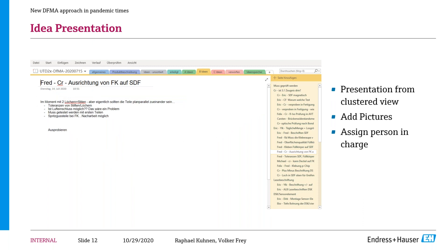When the idea presentations are due, we go through each idea as we would with post-its. The participant who wrote the idea explains it, adds pictures as necessary, we discuss it, and then a responsible person's name is added — this is the person I'll ask in the follow-up checkup about what happened with the idea.